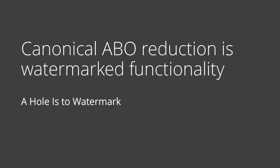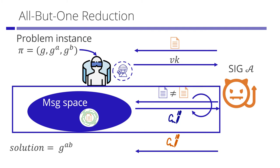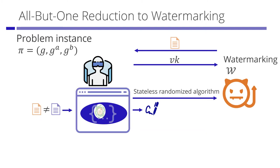Let's move to how to achieve watermarking functionality by using all-but-one reductions. The hole in the message space works as a watermark. Let's look closer at the oracle simulation part again. The oracle simulation works for all messages except the target. I show this oracle simulation part is a watermarked signing function. Imagine we can describe the oracle simulation part as a stateless randomized algorithm. This algorithm outputs a valid signature for a message that is different from the target. So this algorithm has the functionality-preserving property. If a function does not output a valid signature for the target message, it is marked.